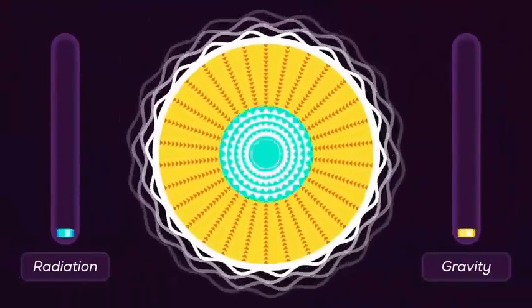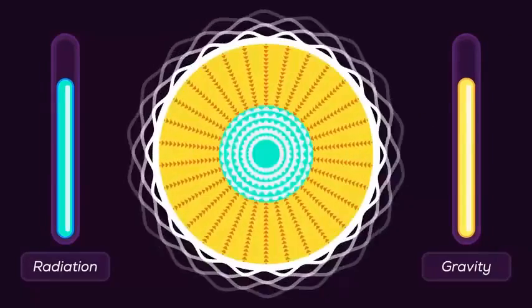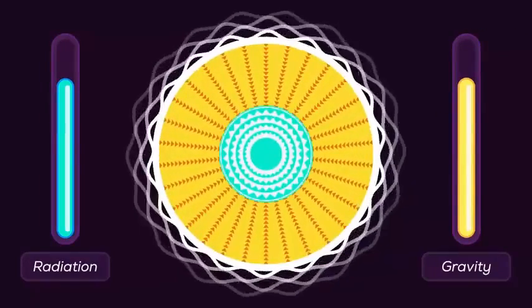A star is a massive collection of hydrogen. Fusion reactions crush hydrogen into helium to release a tremendous amount of energy. The radiation from this energy balances the gravitational pull of the star, so the star remains stable.